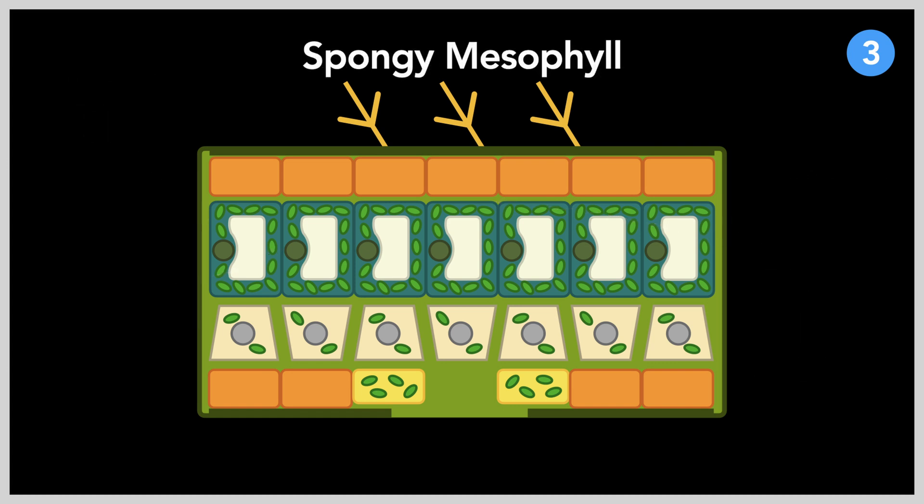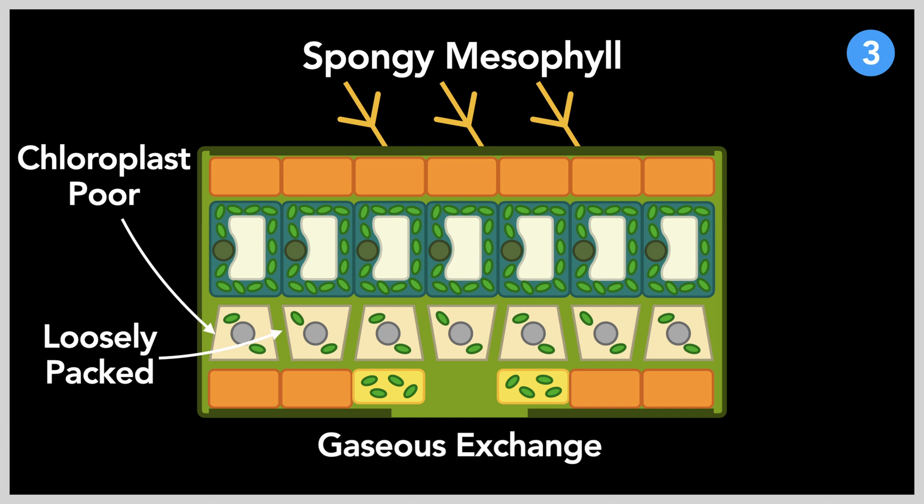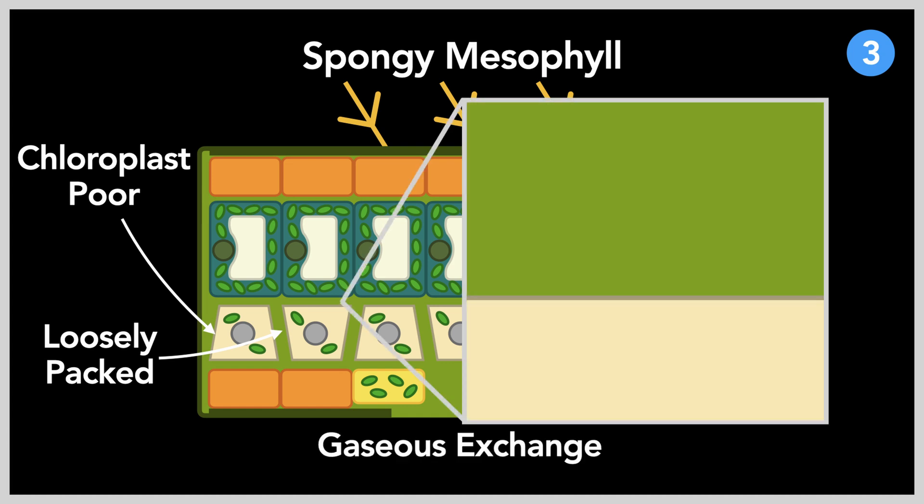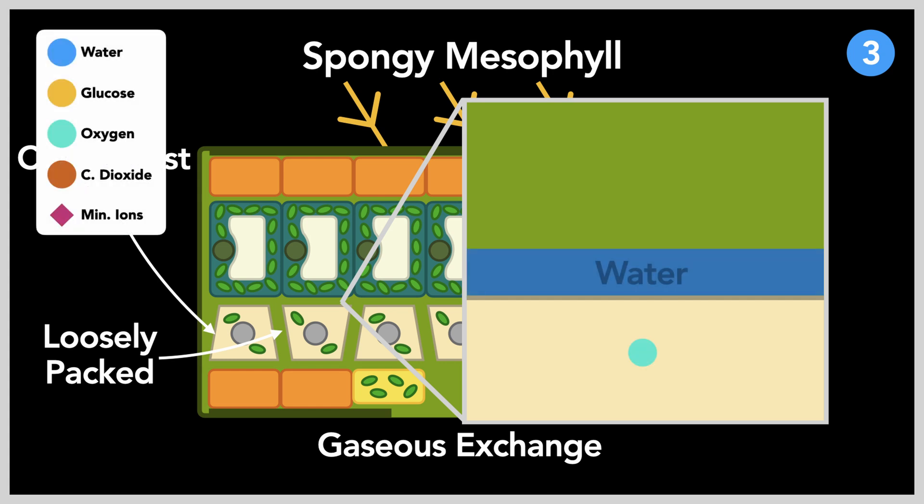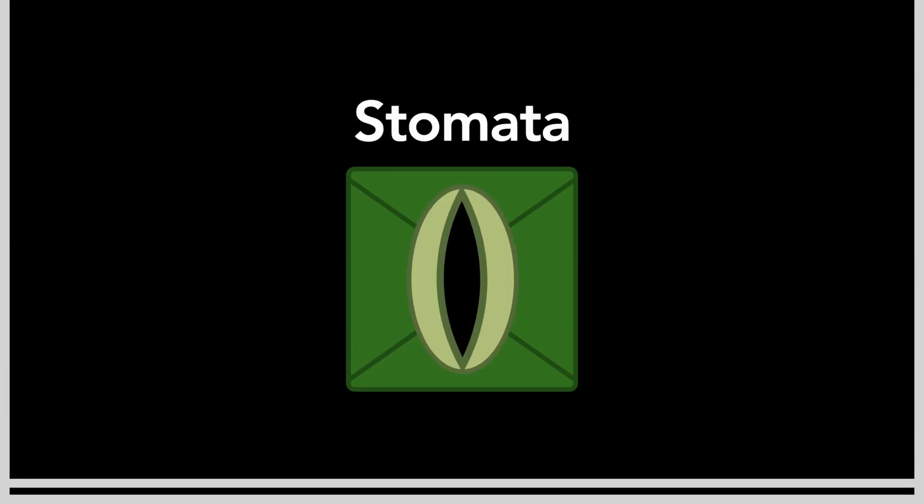The spongy mesophyll contrasts its palisade counterpart, as one barely contains any chloroplasts, and the cells are loosely packed together. The reason for this is because of the spongy mesophyll's role in gaseous exchange. The spongy mesophyll is coated in a thin layer of water. Gases involved in gaseous exchange dissolve into this water when they diffuse in and out of these cells. For example, during photosynthesis, high demand carbon dioxide would diffuse into the spongy mesophyll, while oxygen gas would diffuse out as a waste product.